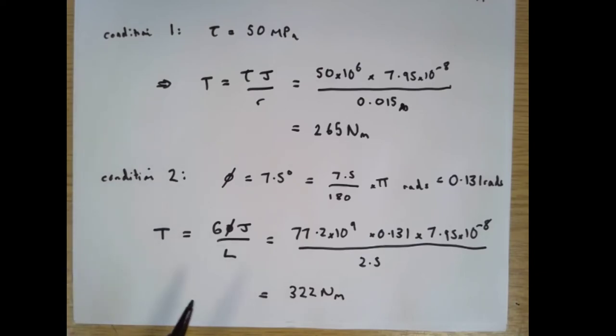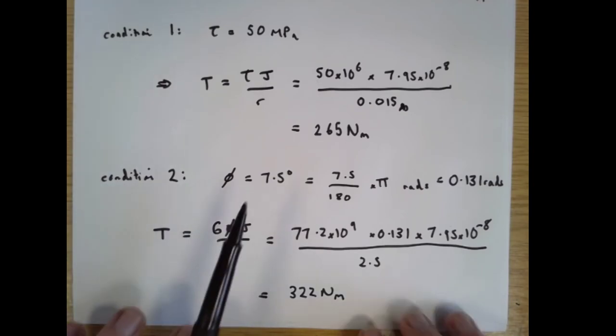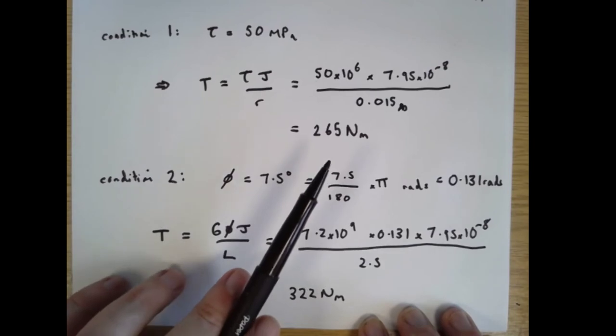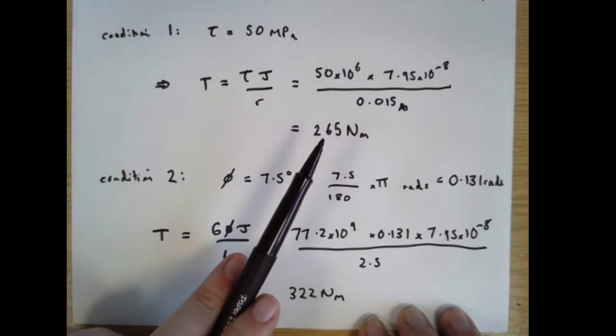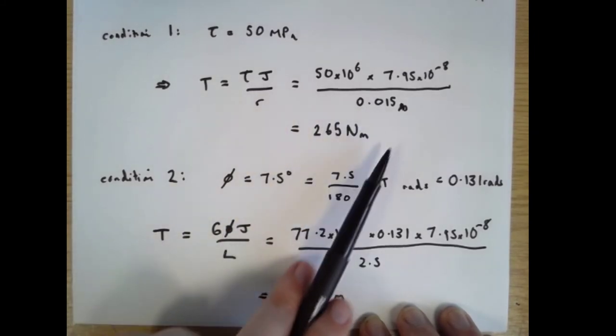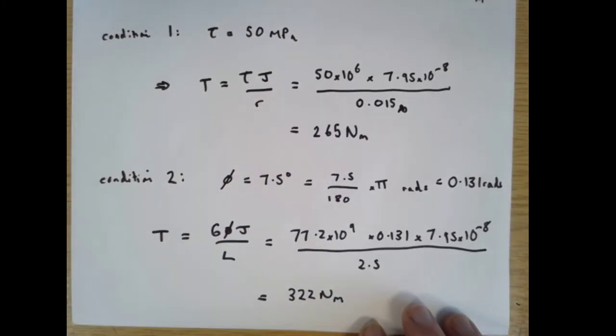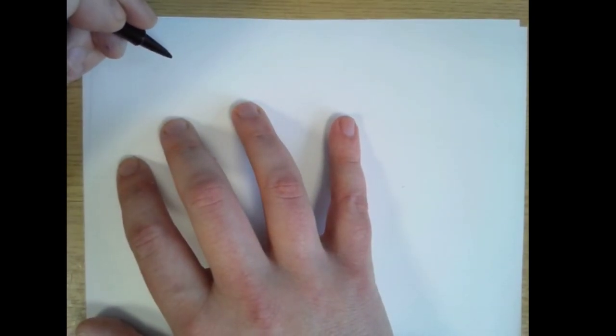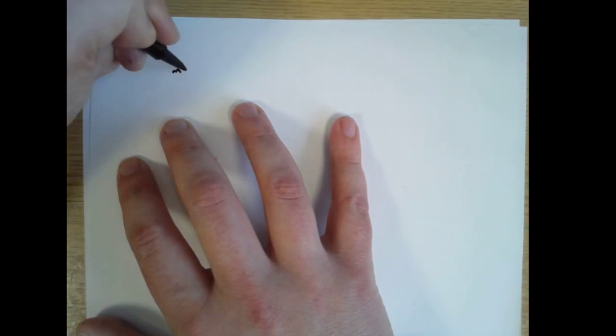So what we want to know is what's the maximum power and for that we really want to know the maximum torque. The maximum torque is the lower of these two numbers. If we go over 265 we break one condition, if we go over 322 we'll break both conditions, but as soon as we've broken one we're against the rules. This is the maximum torque that we're allowed. Sometimes it takes just a bit of thought when you have two conditions to choose which one you have to pay attention to, but in this case it's the lower number of the two. So max torque is 265 newton meters.